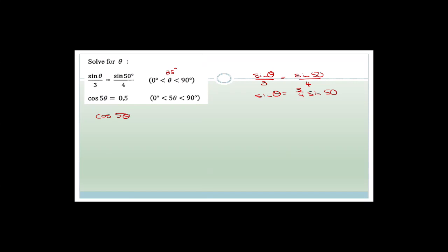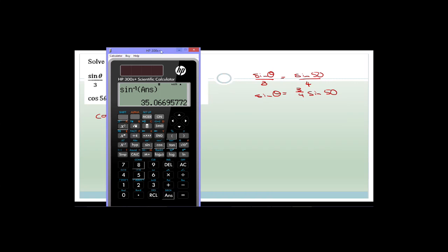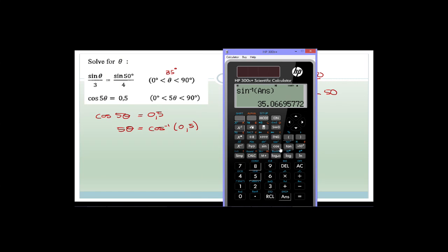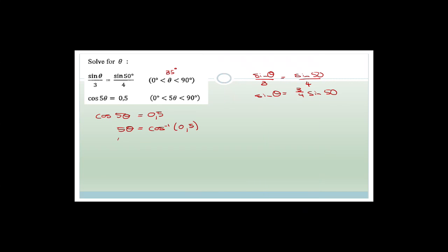Next: cos(5θ) = 0.5. So 5θ = shift cos of 0.5. We go shift cos(0.5) and that's 60 degrees. So 5θ = 60 degrees, and it is between 0 and 90 degrees. They've asked us to solve for theta, so therefore theta = 60 divided by 5, which is 12 degrees.